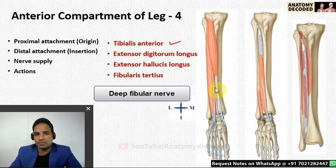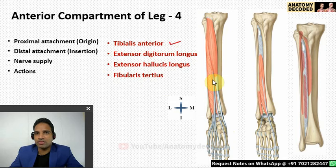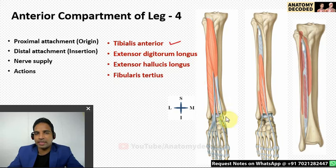Nerve supply of all four muscles in the anterior compartment is by the deep fibular nerve. The sciatic nerve divides into the tibial nerve and common fibular nerve; the common fibular nerve then divides into the deep fibular nerve and superficial fibular nerve. The deep fibular nerve supplies the anterior compartment, and the superficial fibular nerve supplies the lateral compartment. The action of tibialis anterior is dorsiflexion at the ankle joint and inversion of the foot.